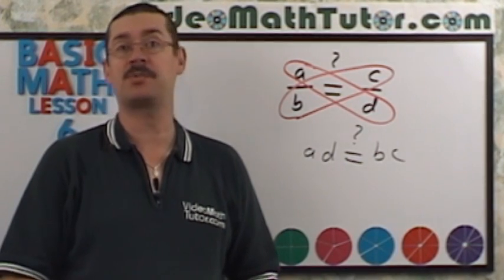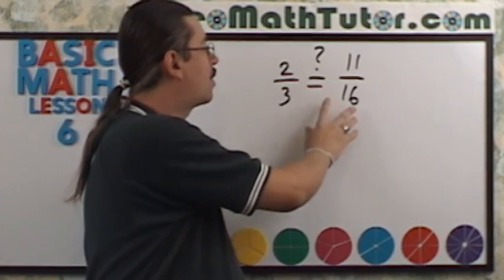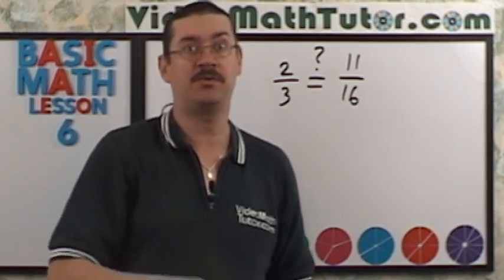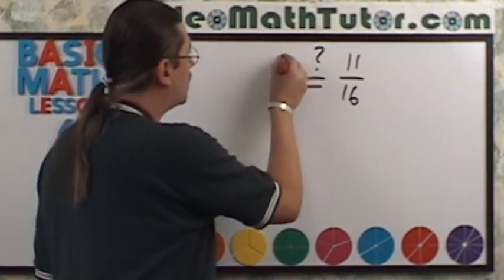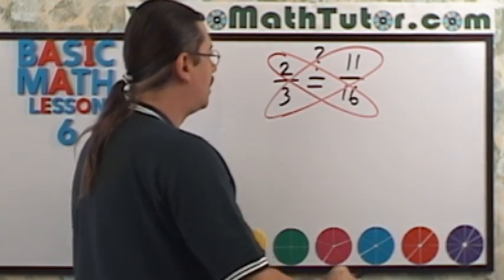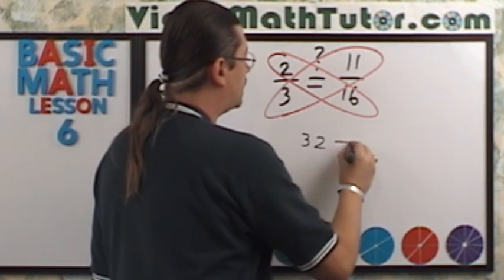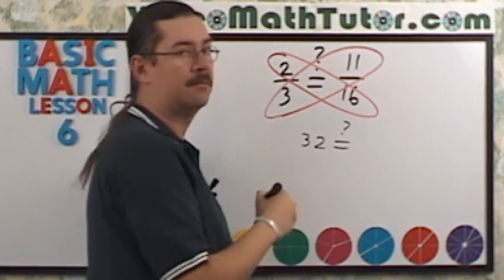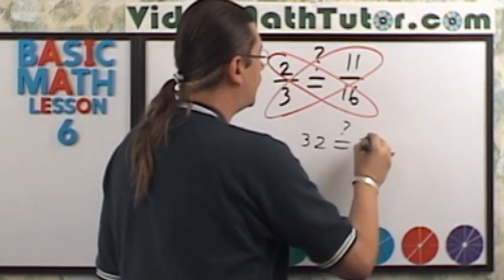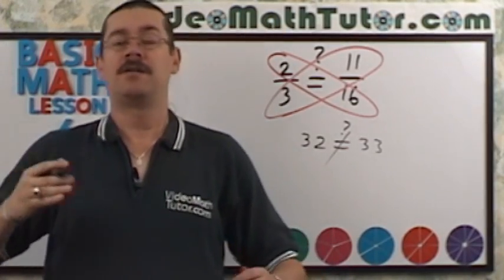Let's try this with our previous problem: is 2 thirds equivalent to 11 sixteenths? We already know the answer is no, but let's officially prove it. Cross multiply: 2 times 16 equals 32. Is that the same as 3 times 11, which is 33? No. Therefore, they're not equivalent.